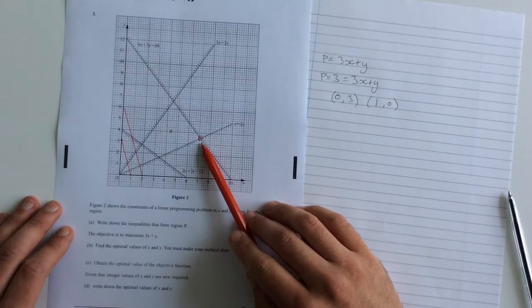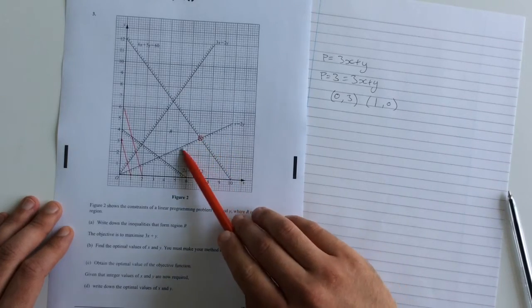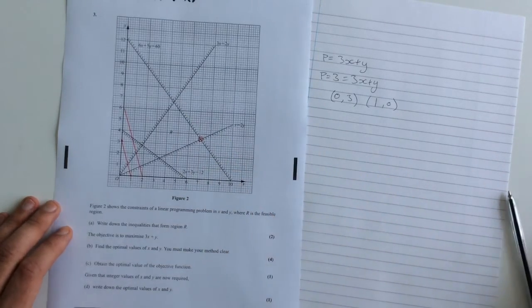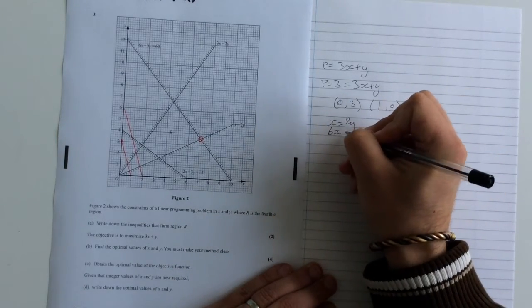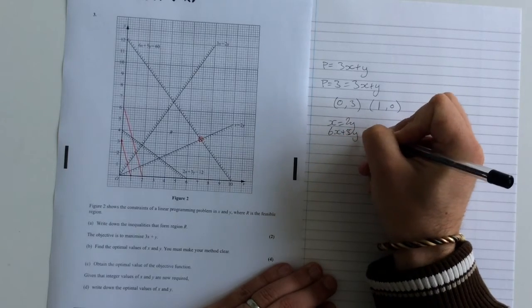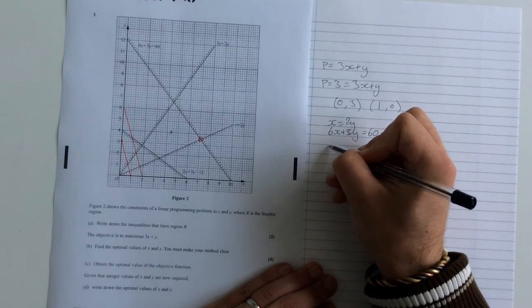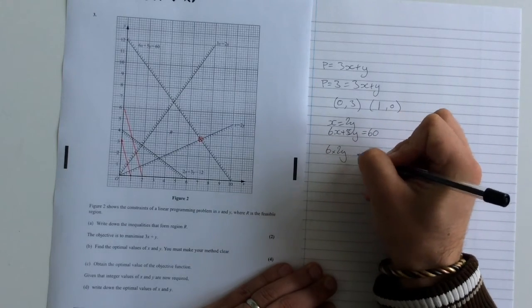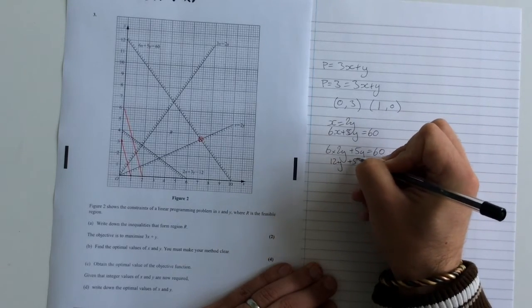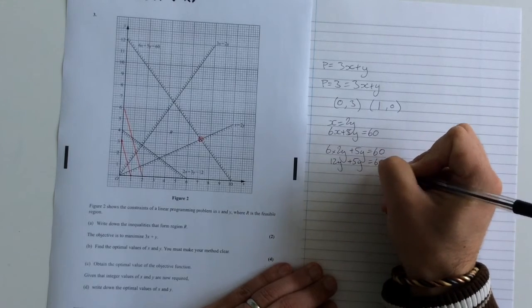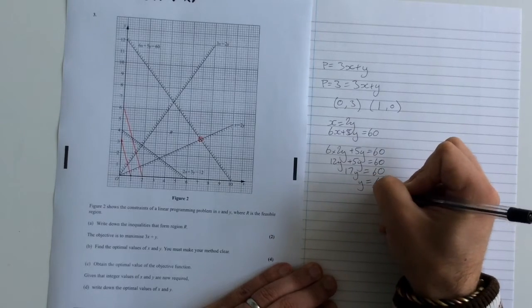Of course, we need to find the coordinates for this because we need to know the values for x and y. Well, that comes on this constraint line and that constraint line. They are x equals 2y and 6x plus 5y equals 60. So, of course, I've got to find the values that solve both of these. Well, x is equal to 2y, so let's work with that. 6 times 2y plus 5y equals 60. So we've got 12y plus 5y equals 60. Or 17y equals 60. So we know that y equals 60 over 17.